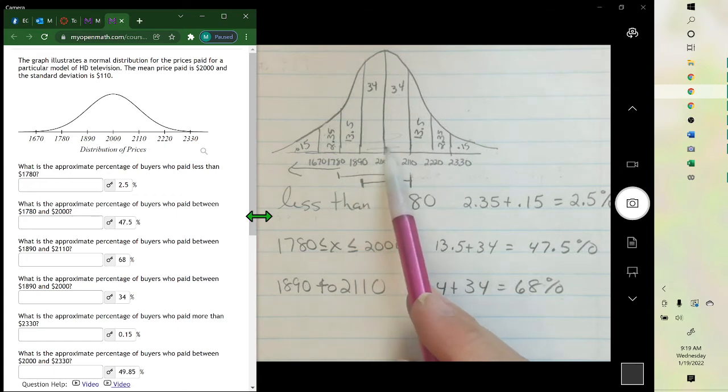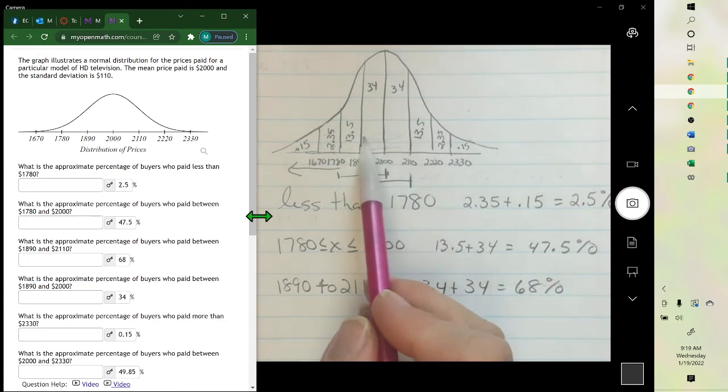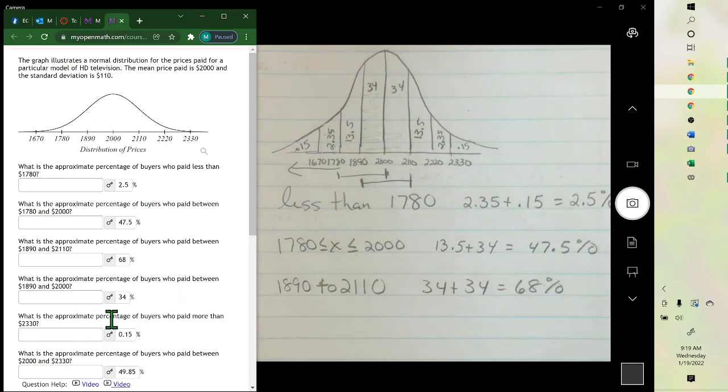$1890 to $2,000 is just between here. So it's 34%.